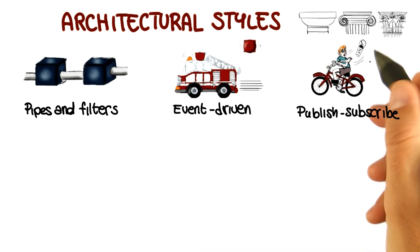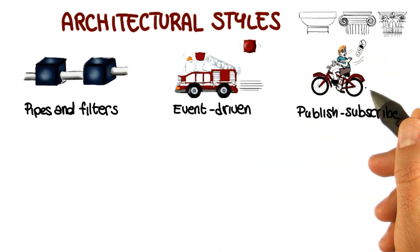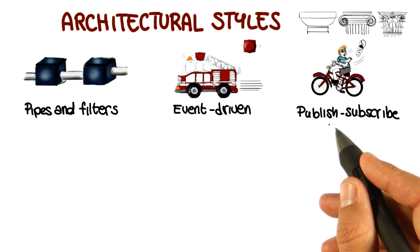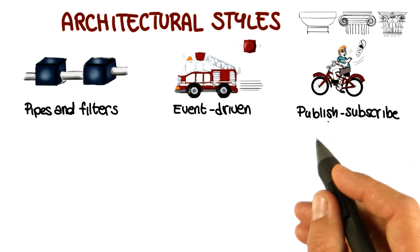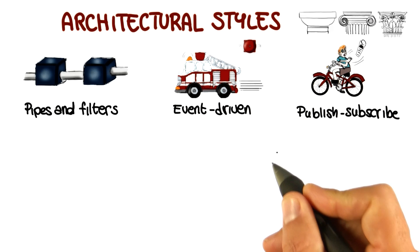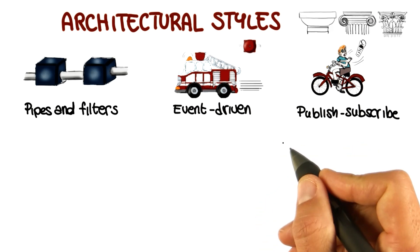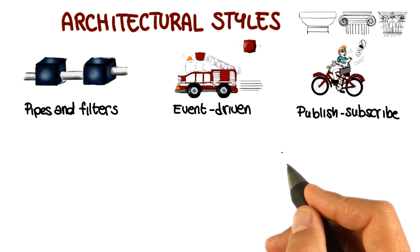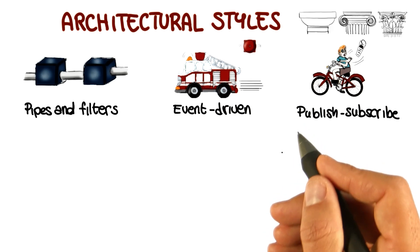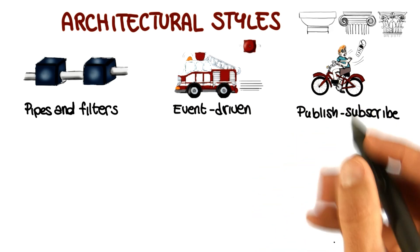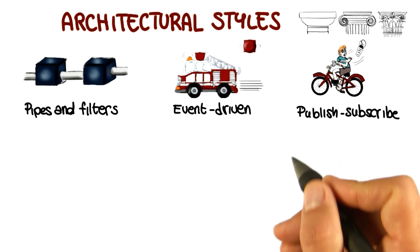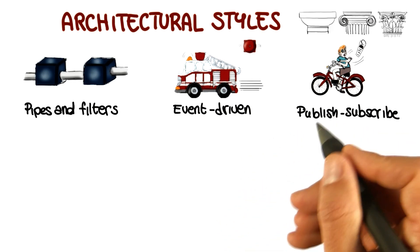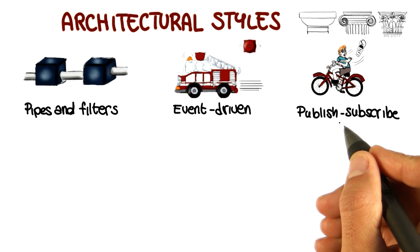A very commonly used architectural style is publish-subscribe, represented by the paperboy over here. This is an architectural style in which senders of messages, called publishers, do not send messages directly to specific receivers. Instead, they publish messages with one or more associated tags, without knowledge of who will receive such messages. Similarly, subscribers will express interest in one or more tags, and will only receive messages of interest according to those tags.